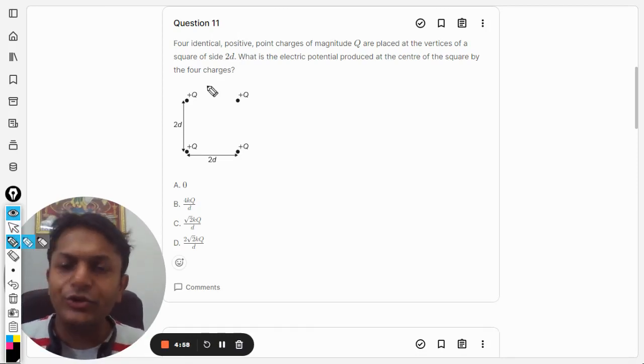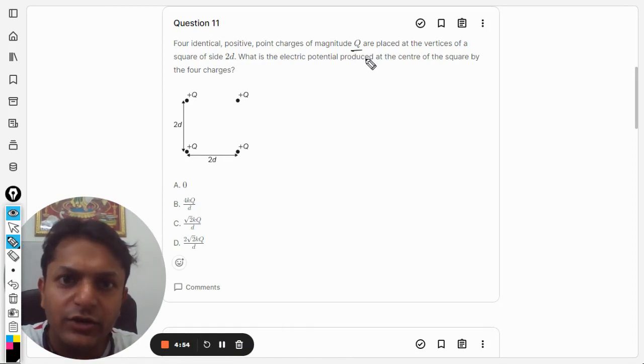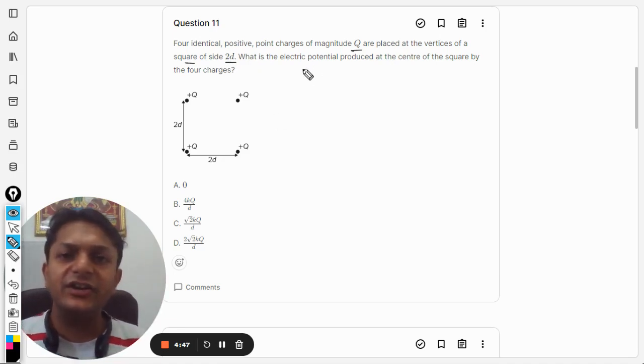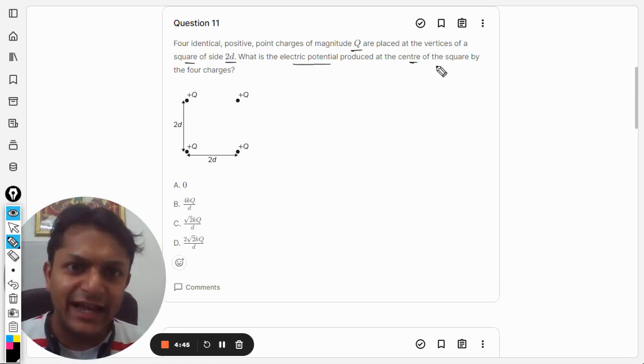Students, let us see what is there in this question. Four identical positive point charges of magnitude capital Q are placed at the vertices of a square of side 2d. What is the electric potential produced at the center of the square by the four charges?